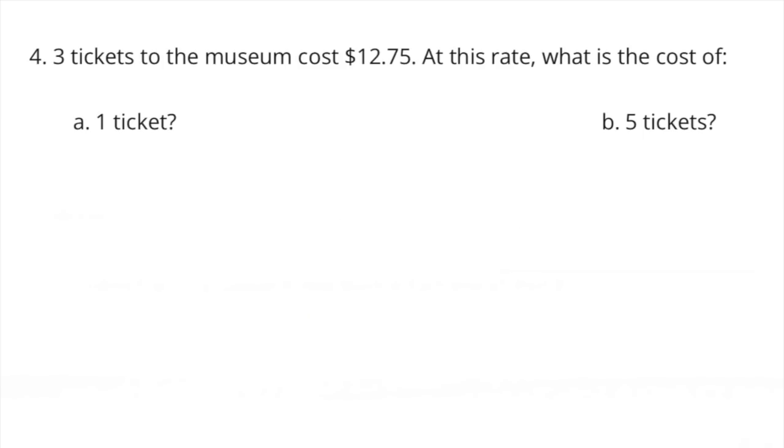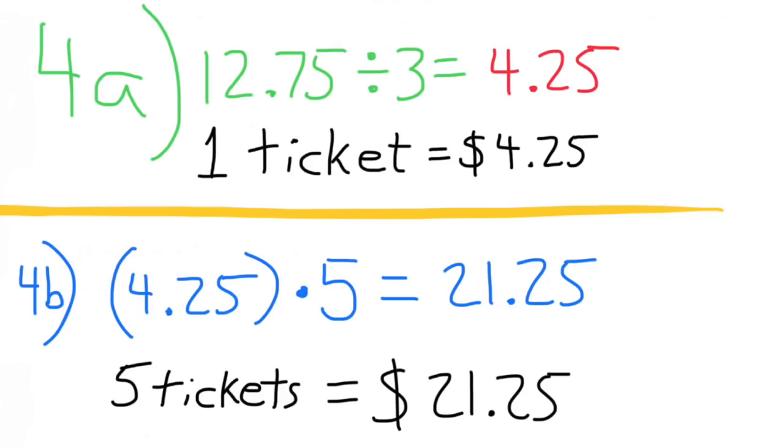Number 4. Three tickets to the museum cost $12.75. At this rate, what is the cost of A. One ticket and B. Five tickets? $12.75 divided by 3 equals four dollars and twenty-five cents. B. Four dollars and twenty-five cents times five equals twenty-one dollars and twenty-five cents. Five tickets would cost twenty-one dollars and twenty-five cents.